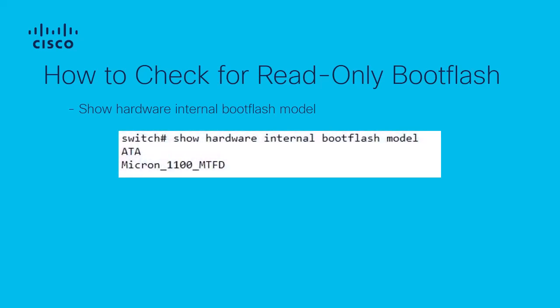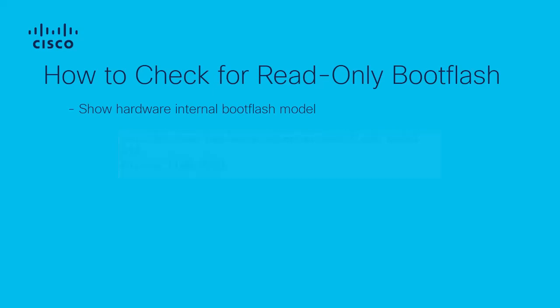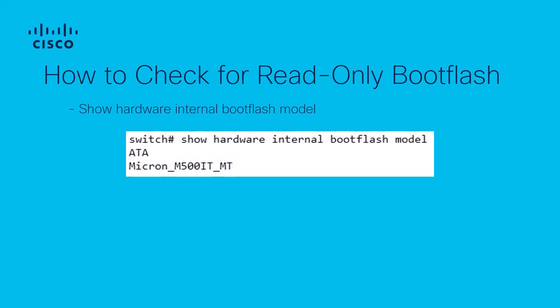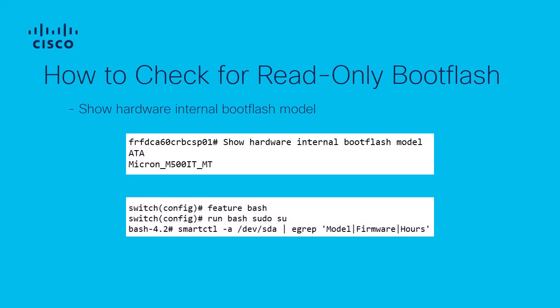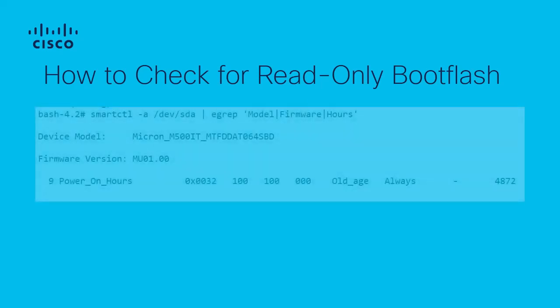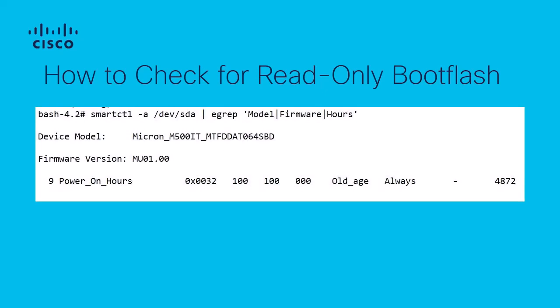In this example, we have the following model of boot flash. Should you enter the show hardware internal boot flash model command and see that the model is a Micron M500IT, after noting all of these symptoms, it means that you could be affected by Field Notice 72150. In that case, you will need to run an additional set of commands which include enabling the BOSH terminal on your switch. Enabling the BOSH terminal is a non-disruptive action. After entering the last command, you will typically be prompted with the following output. You will have further confirmation that your device is affected by the field notice when you see that the firmware version for the boot flash is MU01 or MU02.